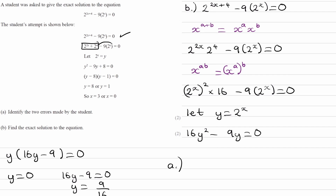The minus 9 times 2 to the power of x is correct, giving minus 9y. So the two errors are: the first mistake in splitting the exponent, and the second mistake where 2 to the power of 4 should become plus 16 rather than plus 8. Those are the two errors, and that is part A done.